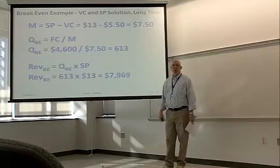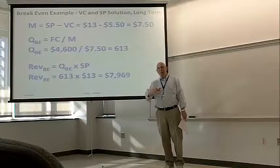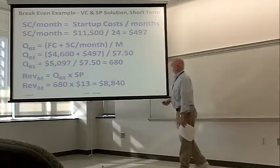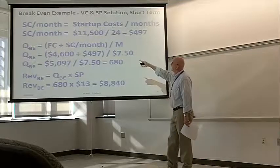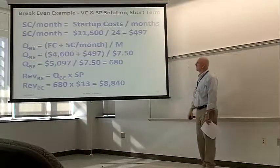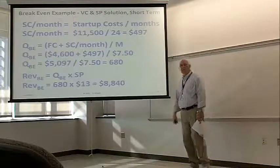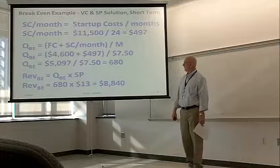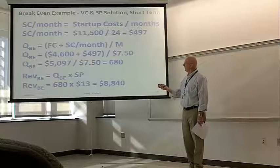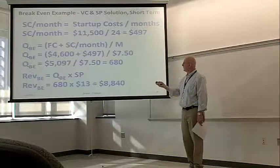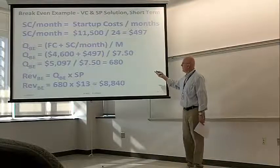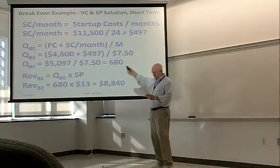That was long term, specifically after the start-up cost allocation period. The short term, we said two years or 24 months to recover that $11,500, and that's about $497 above. So, calculating the quantity breakeven, $4,600, long term fixed costs, plus $497, that's going to be there for two years, divided by the margin, and this goes out to 680.